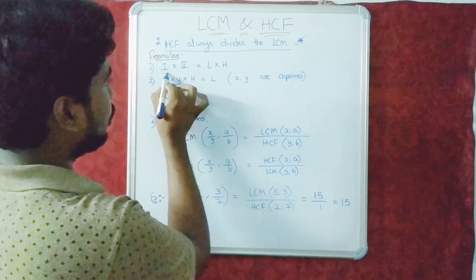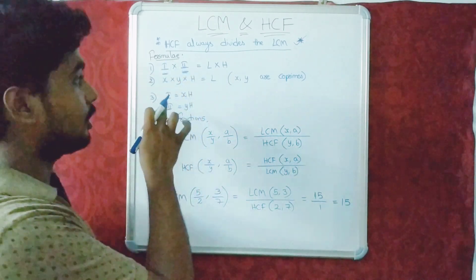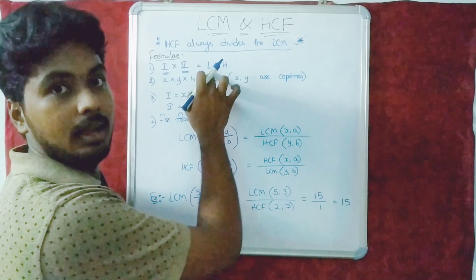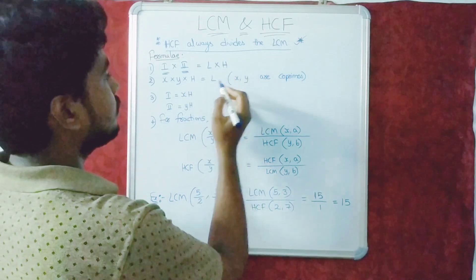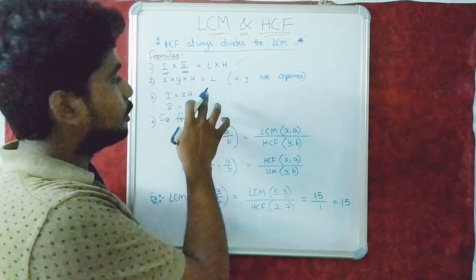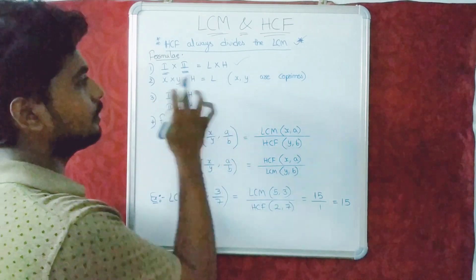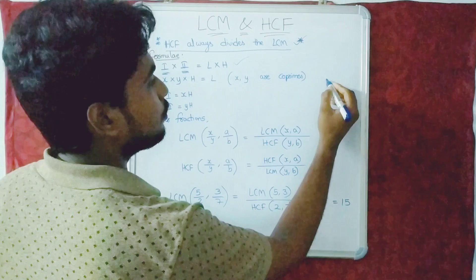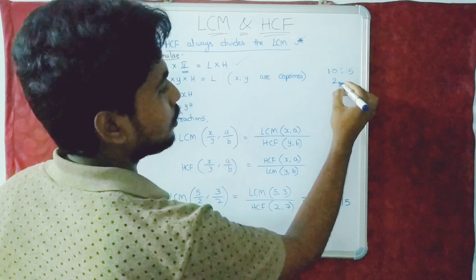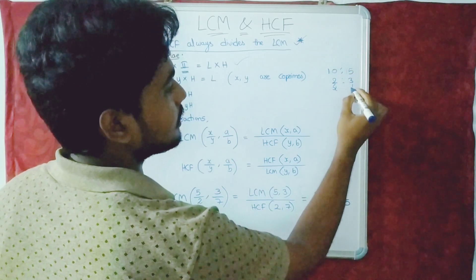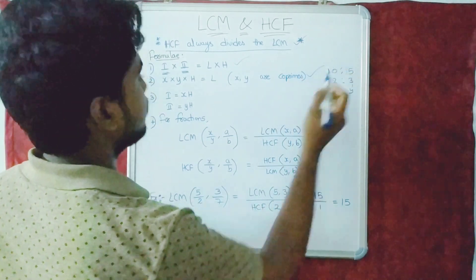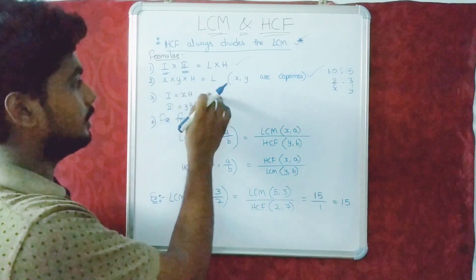First formula: the product of two numbers. If the two numbers are represented as x and y, then x × y = LCM × HCF. So x × y × HCF = LCM. For example, if the numbers are 10 and 15, the ratio is 2:3, so x = 2 and y = 3. This formula — x × y × HCF = LCM — should be remembered directly.